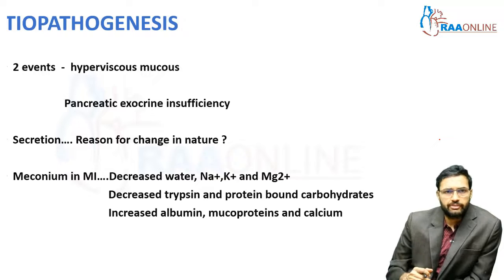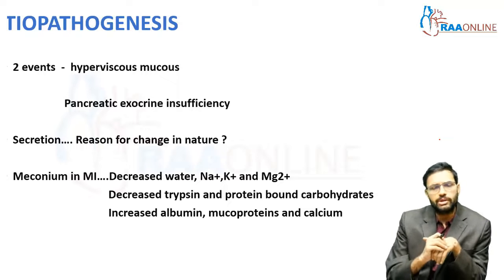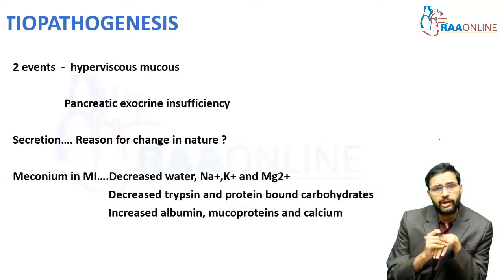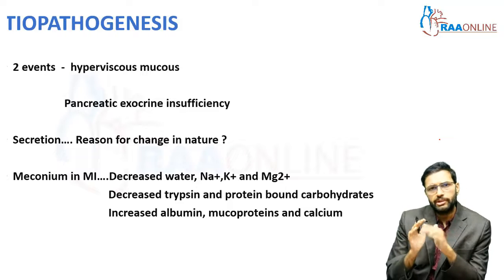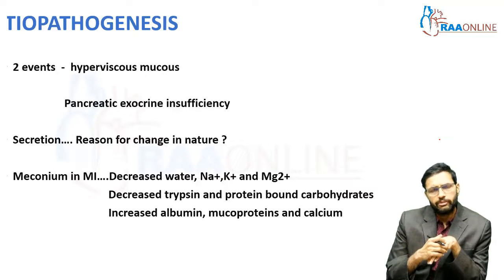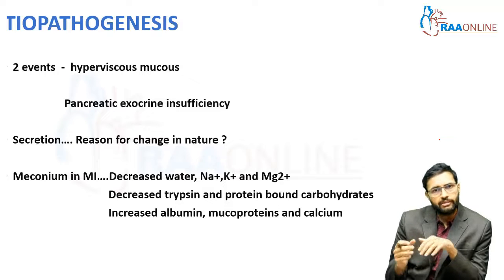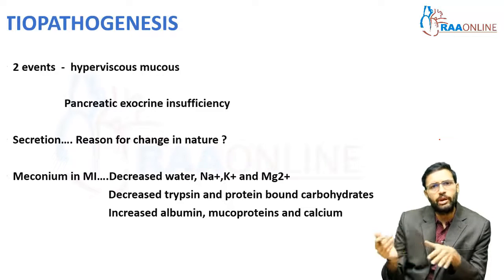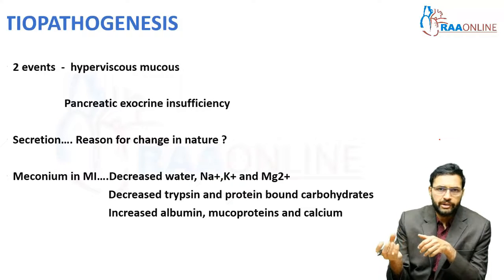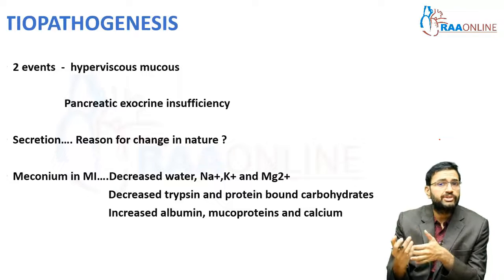The etiopathogenesis of meconium ileus involves two important events: hyperviscous mucus secreted by the intestinal glands, and associated pancreatic exocrine insufficiency. The most important component predisposing to meconium ileus is the hyperviscous mucus. This mucus is hyperviscous because of increased permeability to water loss from secretions, making already thick secretions even thicker. A second cause is alteration in the to-and-fro movement of water from the extravascular space, resulting in failure of dilution of normal contents within the cell, causing them to become toxic and damaging the cell.